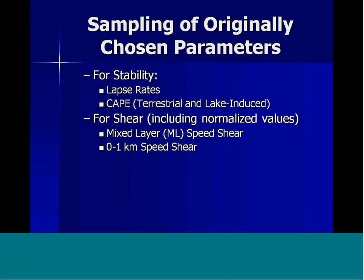The originally chosen parameters for stability included lapse rates, CAPE over the land — terrestrial CAPE — lake-induced CAPE values, and speed shear in the mixed layer, more specifically in the lowest kilometer AGL.